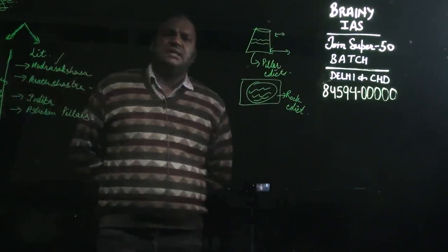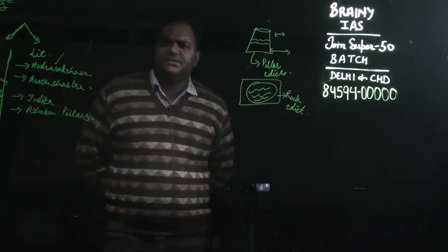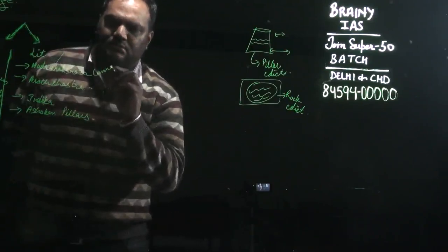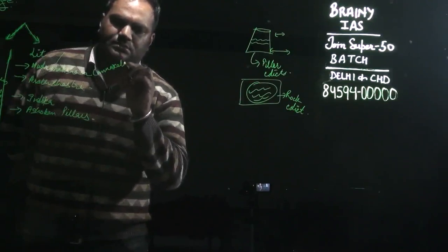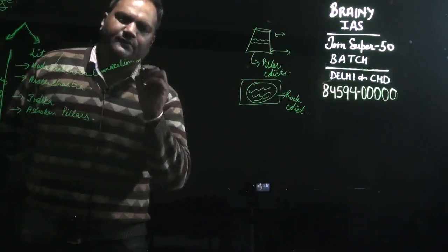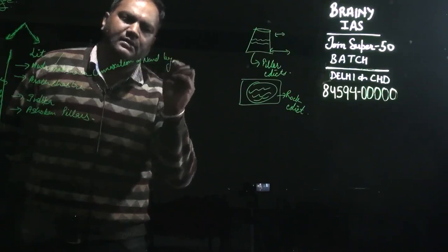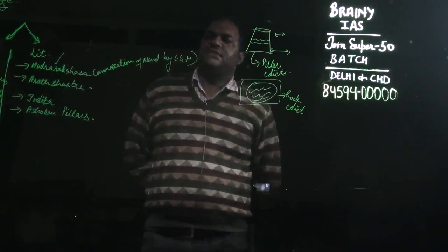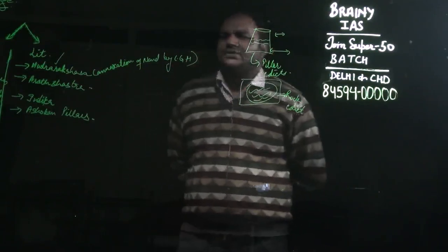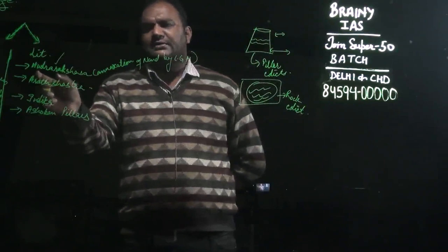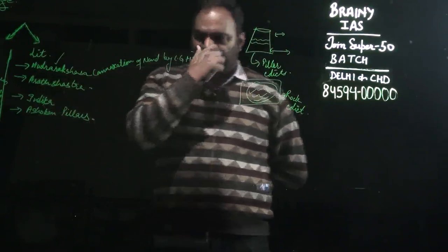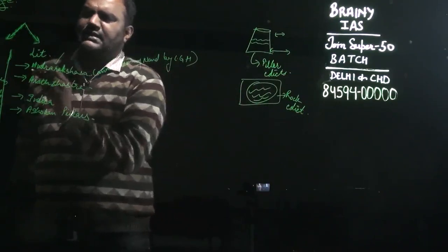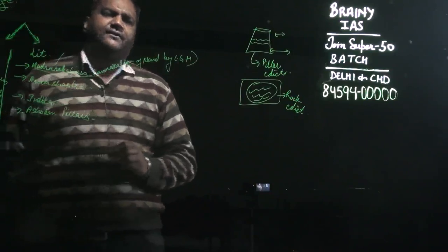Mudrarakshasa is a literary source in which there is a mention of the annexation of the Nanda dynasty by Chandragupta Maurya. Moreover, in Mudrarakshasa we also find mention of the rise of Chandragupta Maurya. So Mudrarakshasa is related to the rise of the Maurya dynasty.